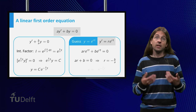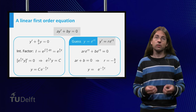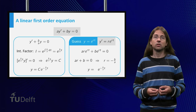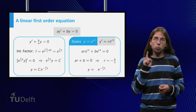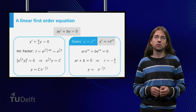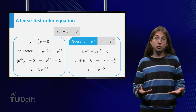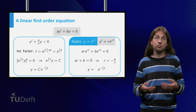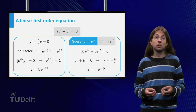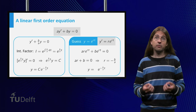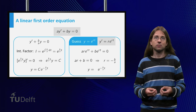Thus e to the minus b over a t is a solution. This has given us one solution, but there are more. If we multiply y by a constant, say 2, the derivative y prime is also multiplied by this constant.